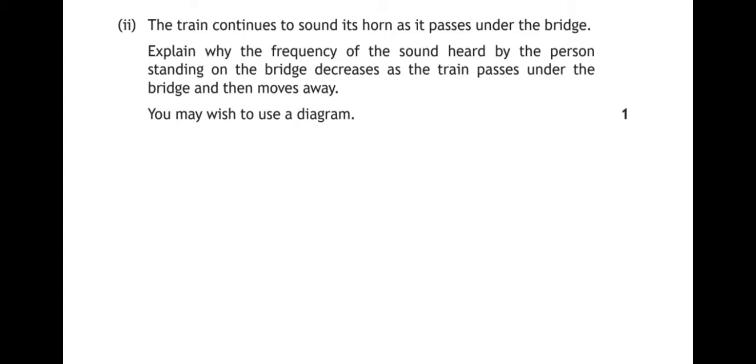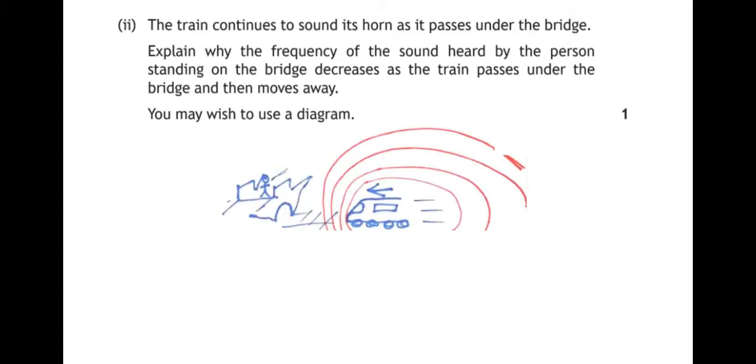Well, here's my little diagram. The red lines indicate the sound waves being emitted by the train. Now, because the train is moving towards the bridge in this diagram, the sound waves ahead of the train are being compressed because the train is moving towards the sound waves as they're being emitted. The sound waves behind the train are being stretched out because the train is moving away from the sound waves as they are being emitted.